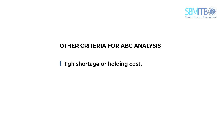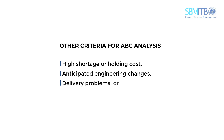Partnership with suppliers of class A products should come first compared with other products. Other criteria besides annual dollar volume can be used in ABC analysis—for example, high shortage or holding costs, anticipated engineering changes, delivery problems, or quality problems can be used as criteria to upgrade products to a higher classification.